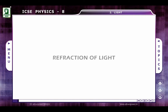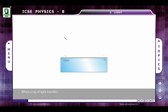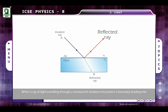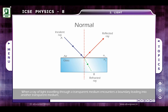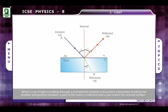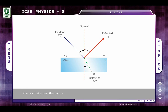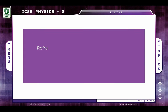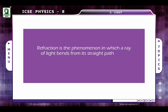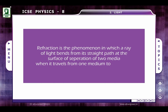Refraction of Light. When a ray of light traveling through a transparent medium encounters a boundary leading into another transparent medium, a part of the wave is reflected and a part enters the second medium. The ray that enters the second medium is bent at the boundary and is said to be refracted. Refraction is a phenomenon in which a ray of light bends from its straight-line path at the surface of separation of two media, when it travels from one medium to another.